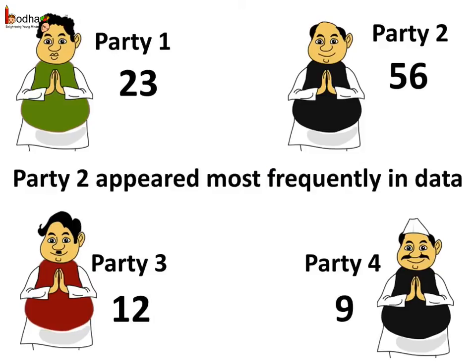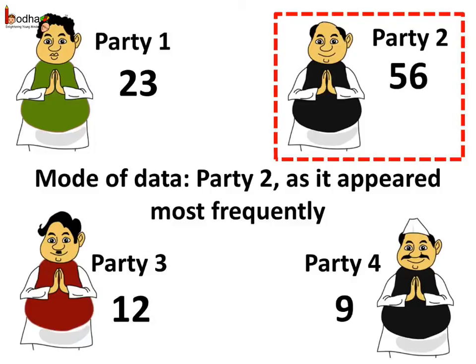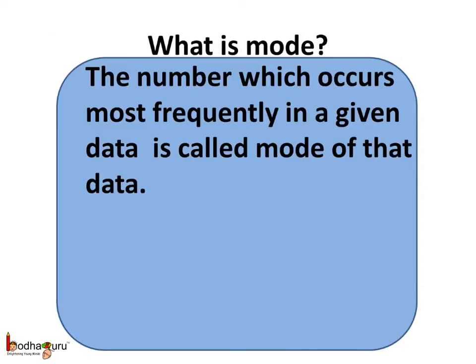So when is the mode useful? The mode of data is useful when one needs to find which value is the most common one. For example, after voting, 100 people were asked which party they voted for: 23 voted for party 1, 56 for party 2, 12 for party 3, and 9 for party 4. Party 2 was the most common, so it would possibly win the election. Here we say party 2 is the mode of data. Remember: the number which occurs most frequently in a given data is called the mode of that data.